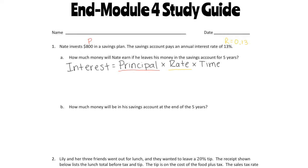For our time, we want to figure out how much he earns in his savings account after 5 years, so 5 is going to be our time. Now let's go ahead and substitute in these values. My principal is going to be 800, my rate is going to be 0.13, and my time is going to be 5. Go ahead and take this time to calculate this multiplication problem with your calculator.